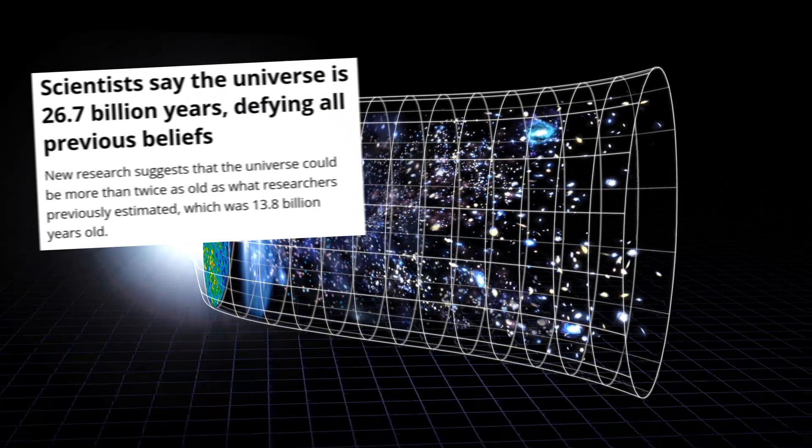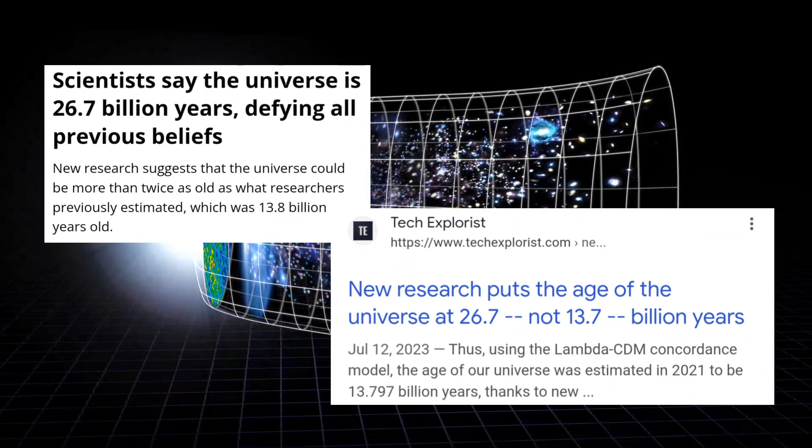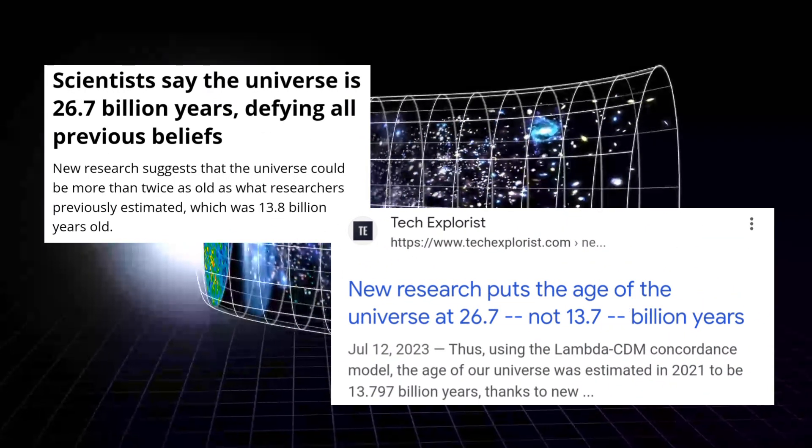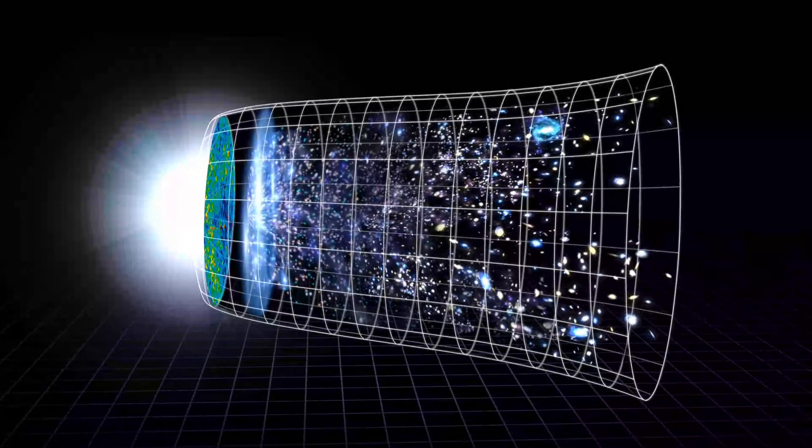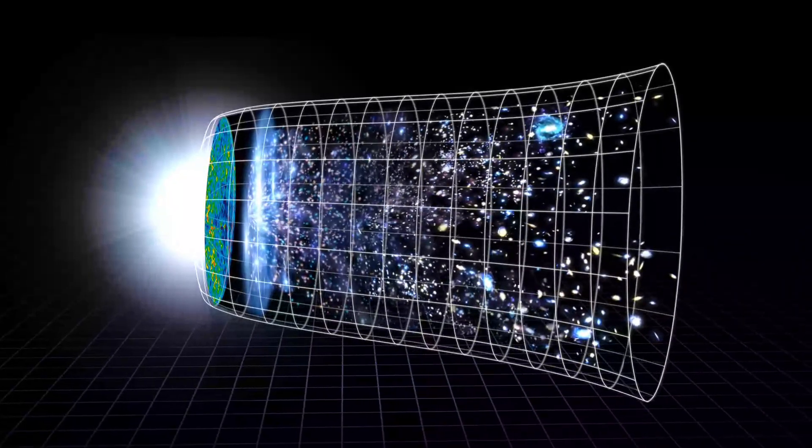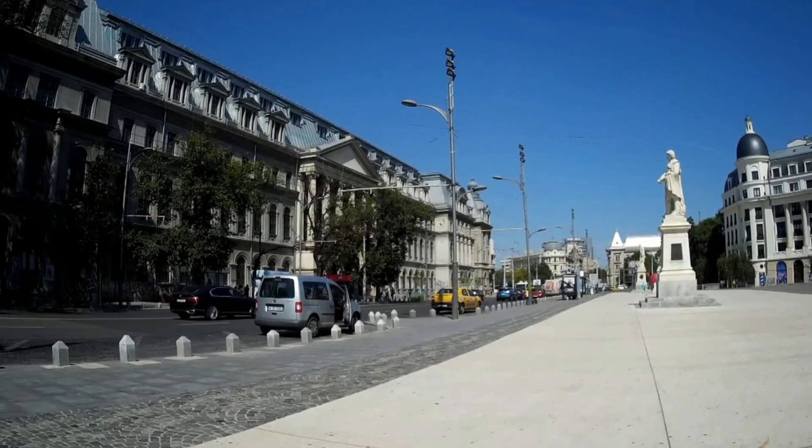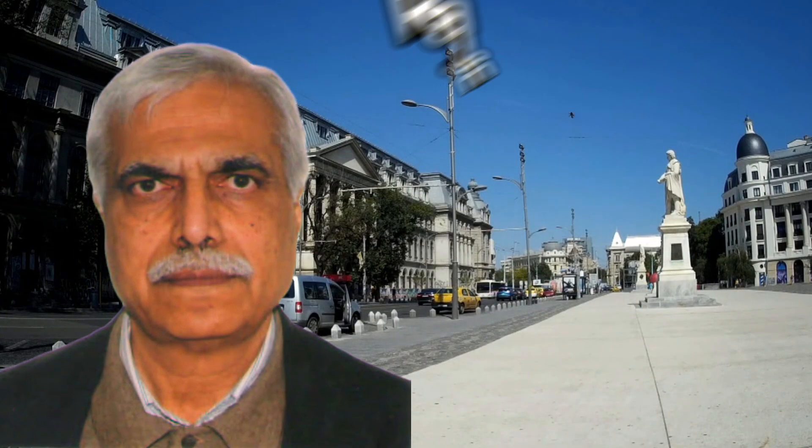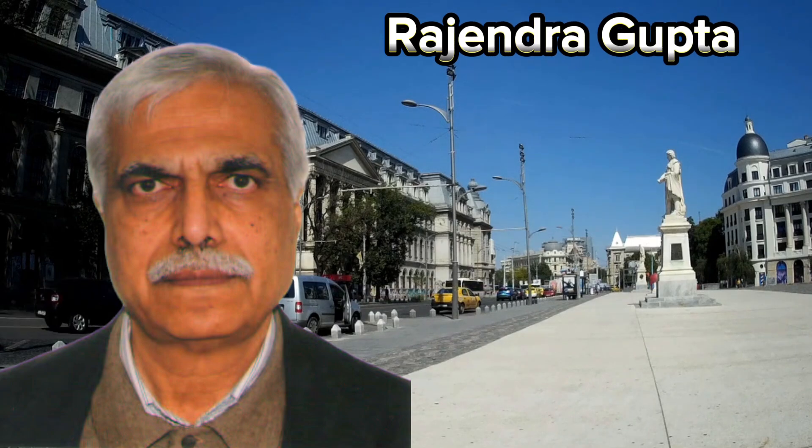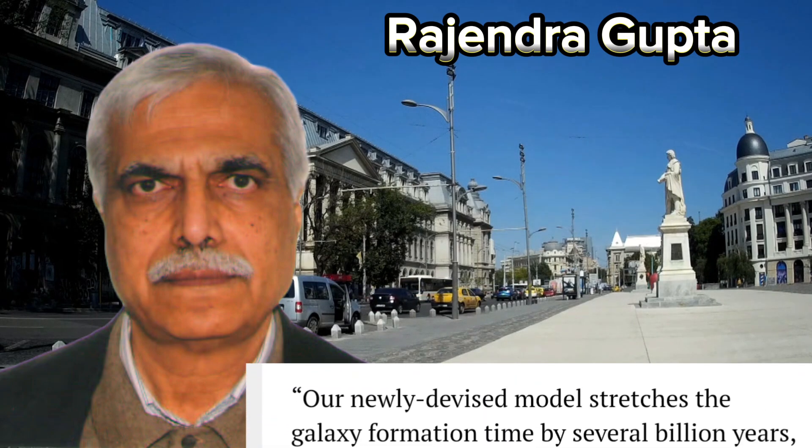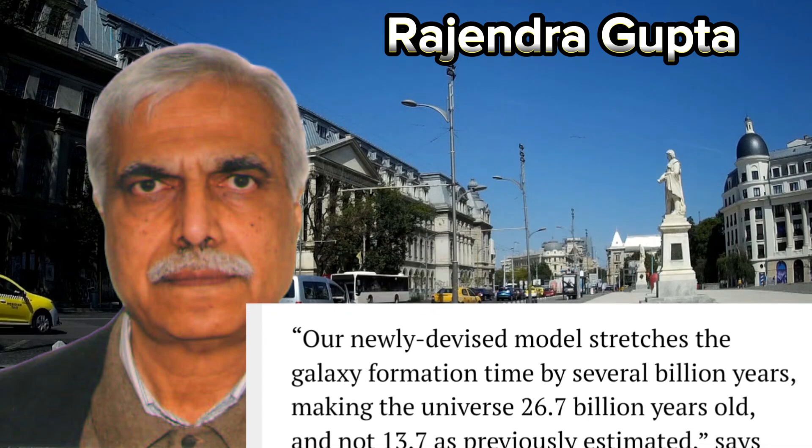But a recent study proposes that the age of the universe might be 26.7 billion years, nearly double the previous estimate of 13.8 billion years. Adjunct Professor of Physics in the Faculty of Science at the University of Ottawa, Rajendra Gupta says, our newly devised model stretches the galaxy formation time by several billion years.